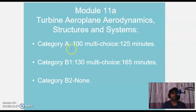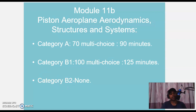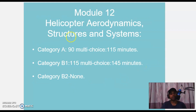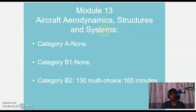Module 11 is one of the more complicated modules. Module 11A — Turbine Aeroplane Aerodynamic Structures and Systems — covers about 80 chapters. Category A: 100 MCQs, 145 minutes. Category B1: 130 MCQs, 165 minutes. Category B2 does not need to do this. Module 11B — Piston Aeroplane Aerodynamic Structures and Systems: Category A 70 MCQs, 90 minutes. Category B1: 100 MCQs, 125 minutes. Category B2 does not need to do this. Module 12 Helicopter Aerodynamic Structures and Systems: Category A 90 MCQs, 115 minutes. Category B1: 150 MCQs, 145 minutes. Category B2 does not need to do this.